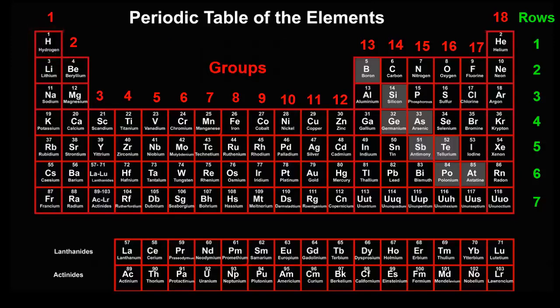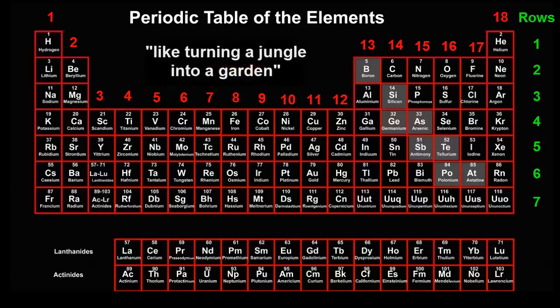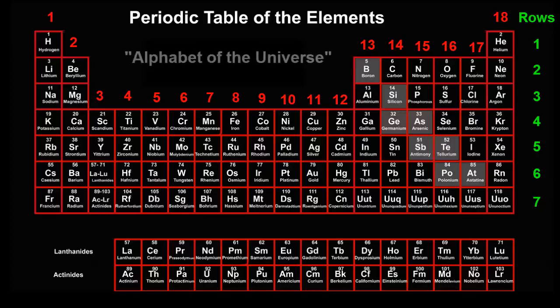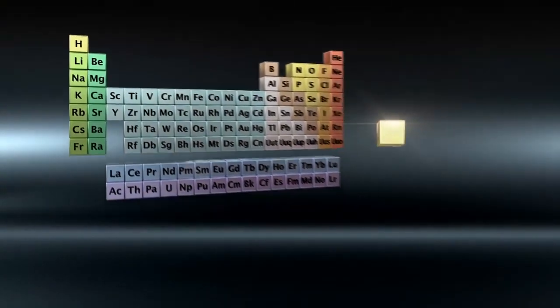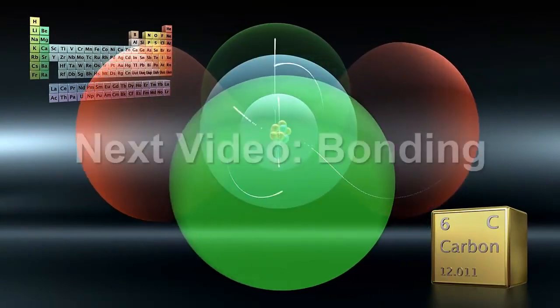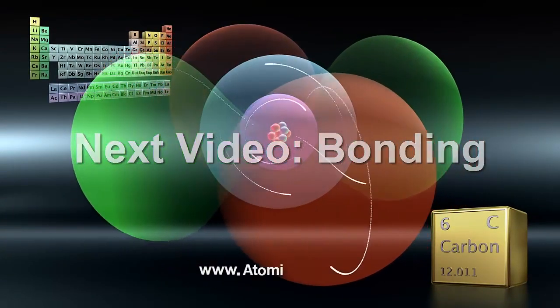The periodic table squeezes a lot of information into a small space. The English writer C.P. Snow said that the periodic table took all the jumbled facts about the elements and fitted them into a pattern, and it was like turning a jungle into a garden. My view is that the periodic table is the alphabet of the universe. Whereas our ordinary alphabet is a list of letters that can make all the words in our language, the periodic table is a list of elements that can make all the substances in the universe.